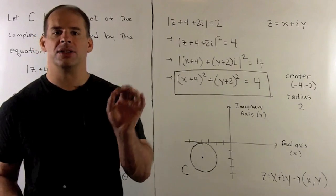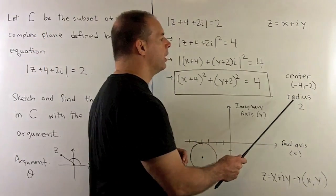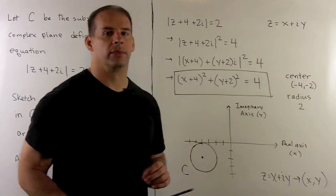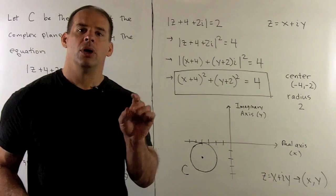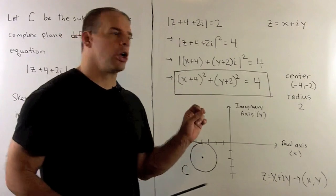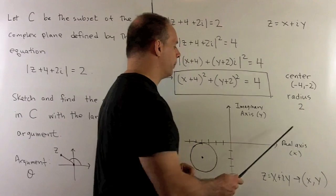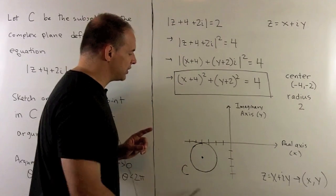And, in the xy plane, this is the equation of a circle. The center, minus 4, minus 2, and radius 2. If we convert over to the complex plane, then it's still going to be a circle. The center is going to be at minus 4, minus 2i, and we have radius 2. So, this is going to be the picture of C.